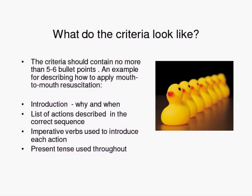Here's an example of what criteria might look like for the mouth-to-mouth resuscitation piece: a bit of an introduction, a list of actions described in the correct sequence, imperative verbs used to introduce each action, and present tense. That's only four bullet points. You would most probably develop it with your learners, and there may be other things needed — perhaps something about the sentences or phrases. There's no right way, but listing what you think is important will be really helpful for them.